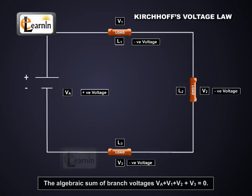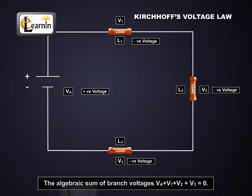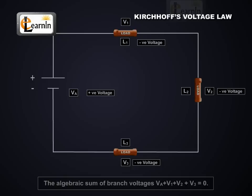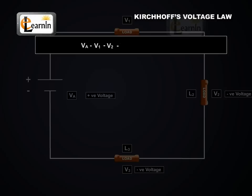Basically, what Kirchhoff's Voltage Law is saying is that the algebraic sum of each of these branch voltages — VA, V1, V2, and V3 — will add up to zero. This means that VA minus V1 minus V2 minus V3 is equal to zero.